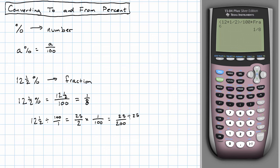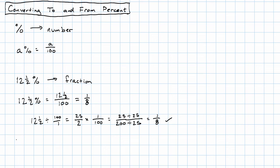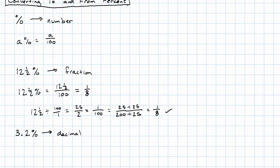Dividing the numerator and denominator each by 25, that really is one-eighth. What about a decimal? What if we have 3.2% and we want to convert it to a decimal?